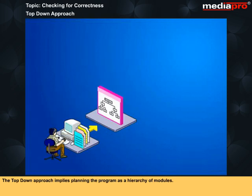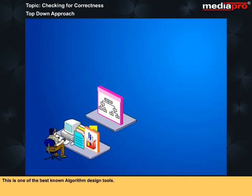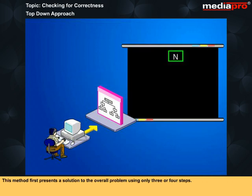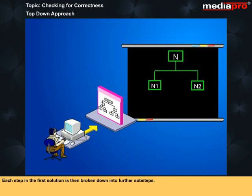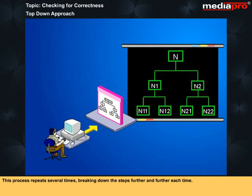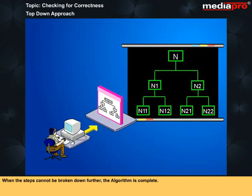The top-down approach implies planning the program as a hierarchy of modules. This is one of the best-known algorithm design tools. It is also called functional decomposition or stepwise refinement. This method first presents a solution to the overall problem using only three or four steps. Each step in the first solution is then broken down into further sub-steps. This process repeats several times, breaking down the steps further and further each time. Each iteration produces a more detailed solution to the original problem. When the steps cannot be broken down further, the algorithm is complete.